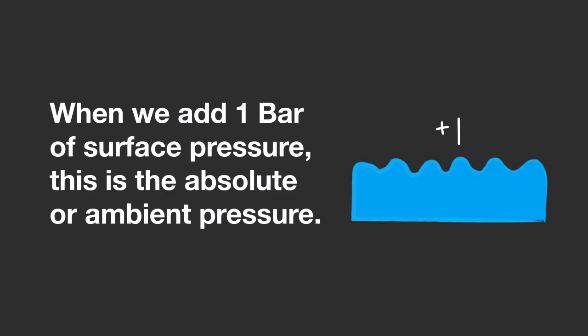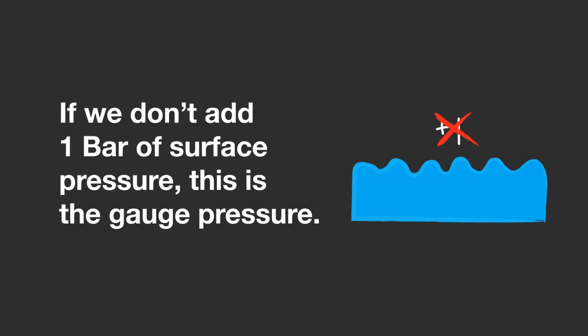When we add the 1 bar of surface pressure, we call this the absolute or ambient pressure. If we do not add the 1 bar of surface pressure, we call this the gauge pressure. The gauge pressure is the water pressure alone.